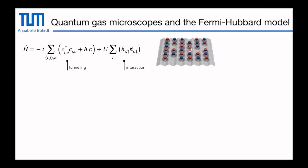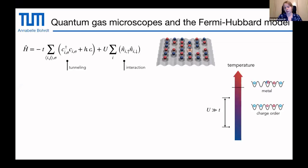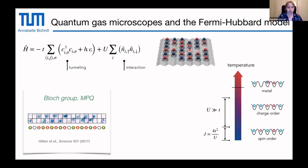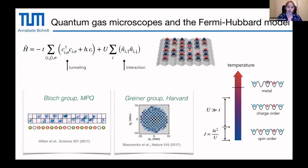If we have exactly one atom per site — half filling — we start at high temperatures with a metal, then we get charge order where each site is occupied by exactly one atom. Lowering the temperature further, we get spin order, because it's favorable to have fermions with opposite spin sitting next to each other, allowing virtual excitations. This antiferromagnetic spin order has been seen in 1D in Immanuel Bloch's group in Munich and in 2D in Marcus Greiner's group, showing nice antiferromagnetic correlations throughout the system.